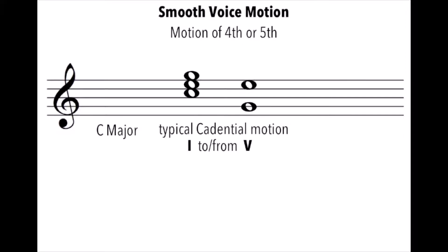So in the key of C major, if we're moving between one and five — C major and G major — the smoothest voice motion: we can see that two of the pitches can simply move by step, and what the other pitch, if displaced an octave, can maintain a common tone.